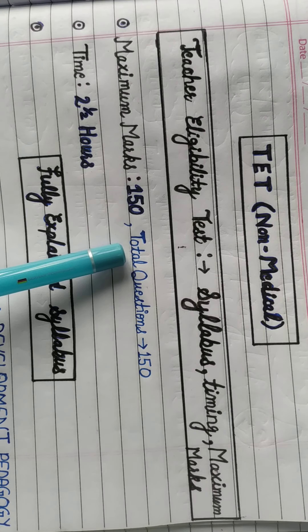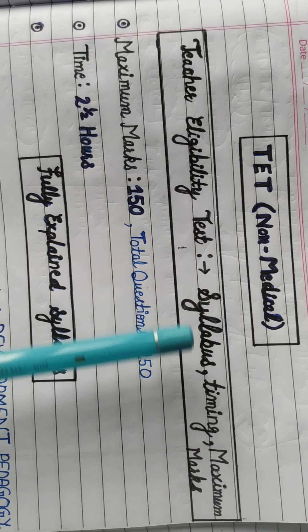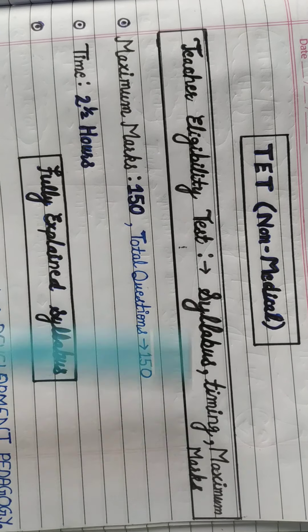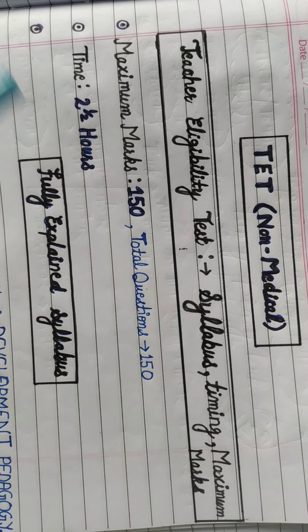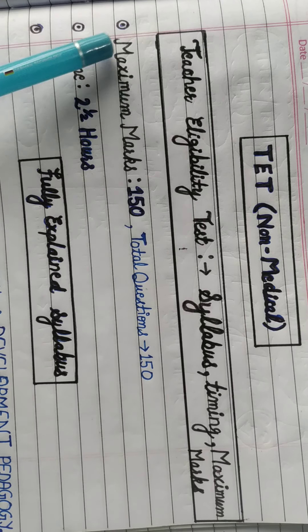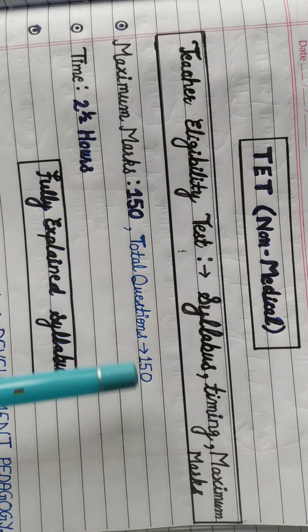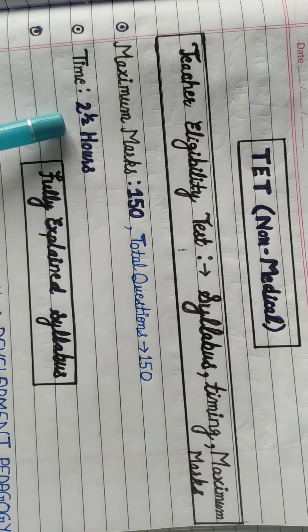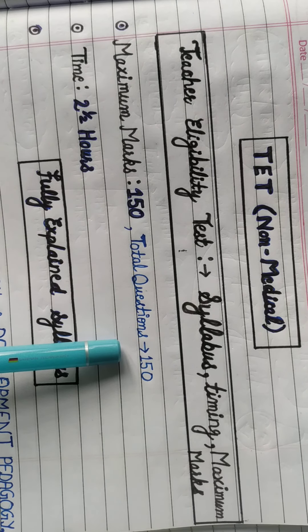Welcome back to the channel. Today we will discuss what is the Teacher Eligibility Test — the syllabus, timing, and maximum marks for TGT Non-Medical. In this test, the total questions are 150 and total marks are 150, meaning you get one mark for every question. The timing is two and a half hours.